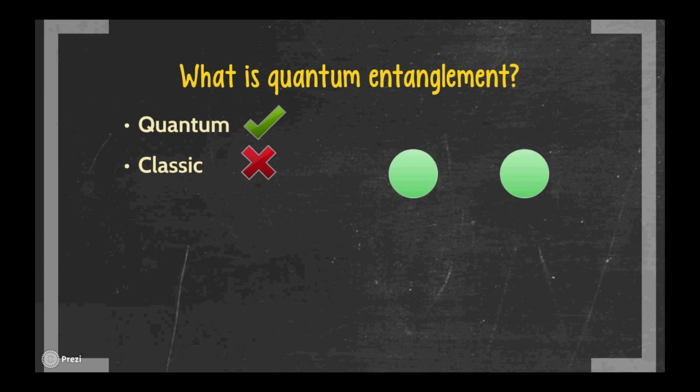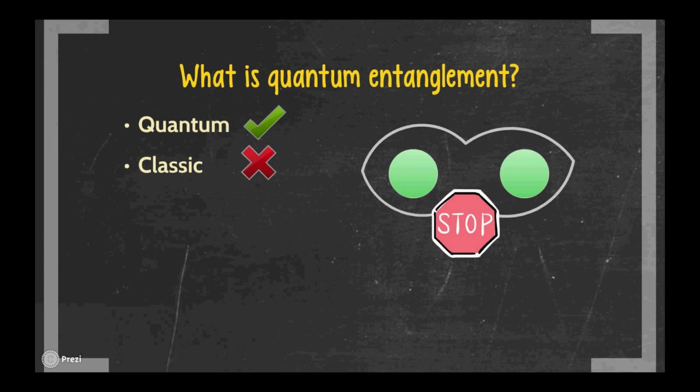When two particles are entangled, it is not possible to describe each particle individually. We need a global description using a combination of possible states of these two particles. Thus, entanglement is nothing more than a special case of quantum superposition.